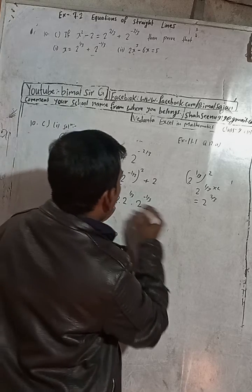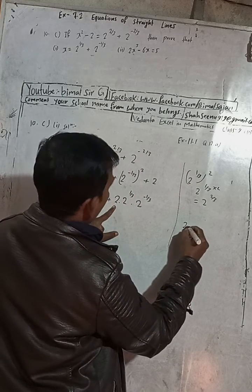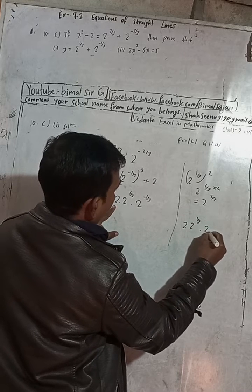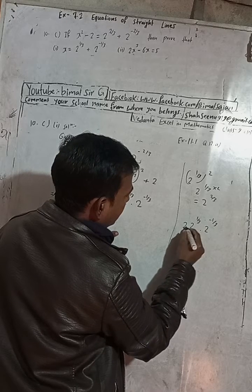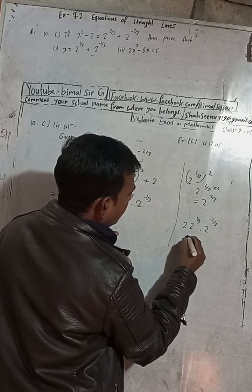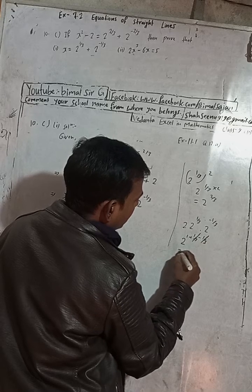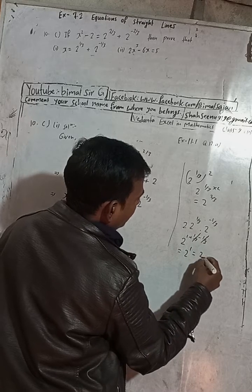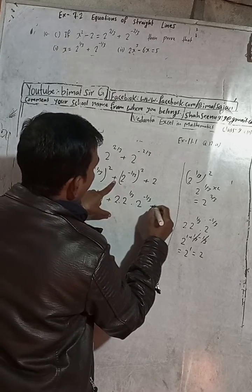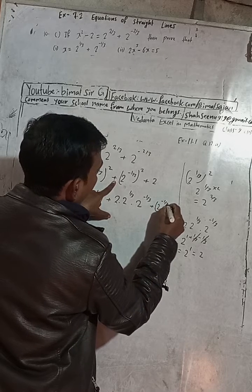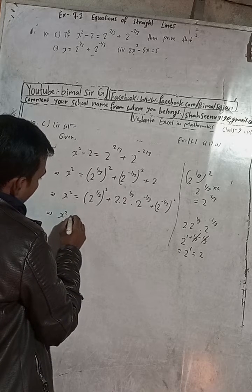See the drop — suppose this is our drop side, understand this first. This is 2 to the power 1 by 3 and 2 to the power minus 1 by 3. When we add the powers: 1 by 3 plus minus 1 by 3, these cancel each other, and we get 2 to the power 1, which equals 2. So this product is equal to 2 only. Then write 2 to the power minus 1 by 3 whole squared.